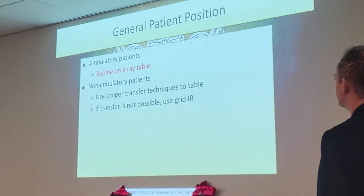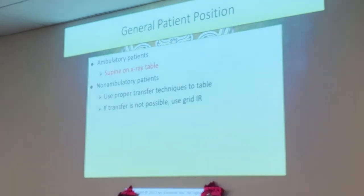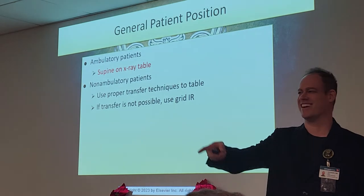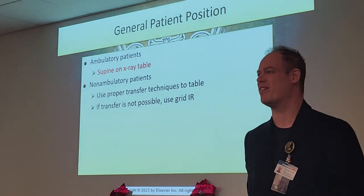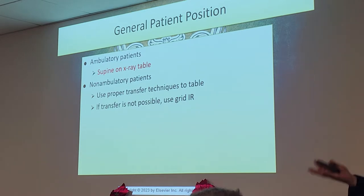Common sense — use proper transfer techniques. Use grid IRs for all these positions. If you're doing this portably, you should use a grid because the area we are X-raying — the hip area of the pelvis — is very thick, with lots to penetrate. We need a grid to reduce scatter and improve image quality. Without a grid, the image will suffer from noise — low spatial resolution equals noise or pixelation.